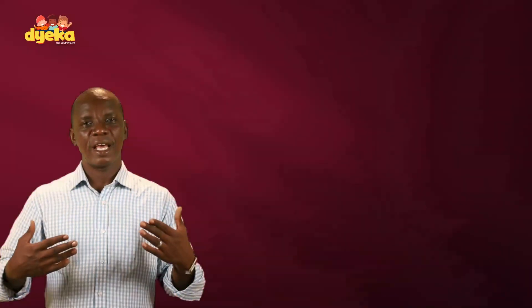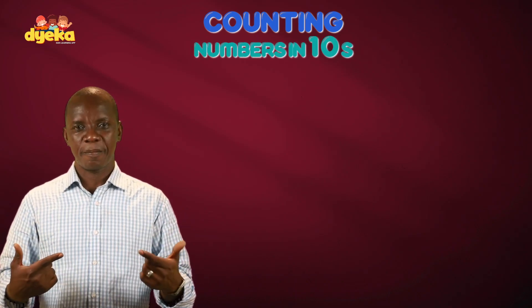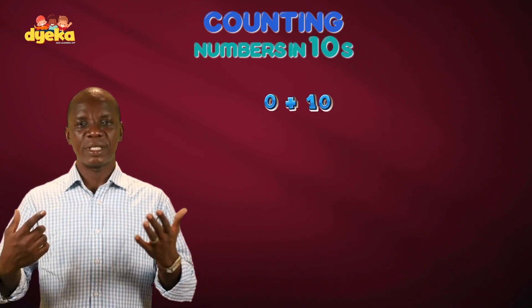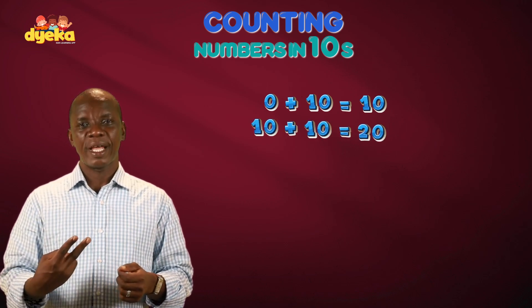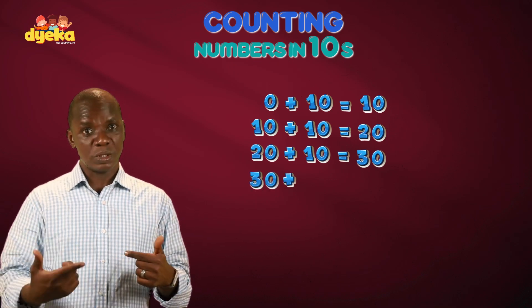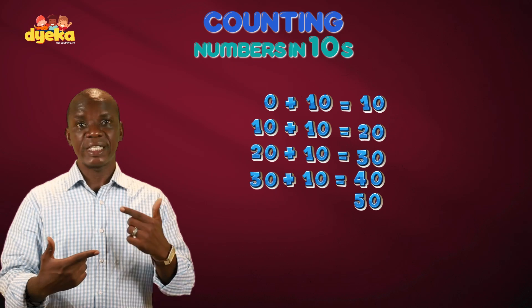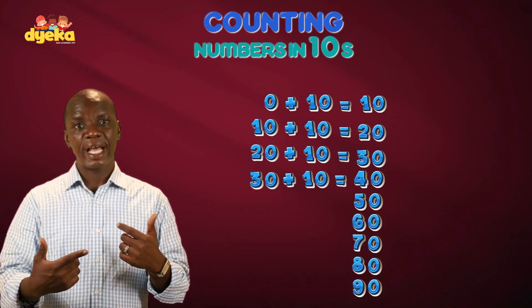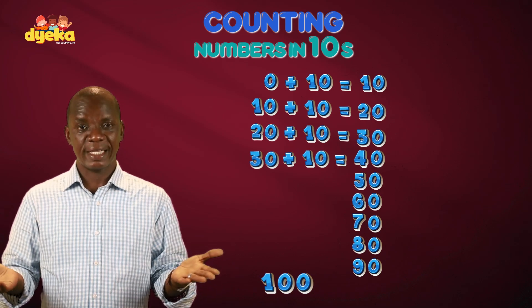Now let's start with counting numbers in tens. If I want to count in tens, all I have to do is keep adding 10. So 0 plus 10 gives me 10, 10 plus another 10 gives me 20, and I add another 10 gives me 30, and I add another 10 that gives me 40, and I can go on: 50, 60, 70, 80, 90, and I get to 100. So I just counted in tens.